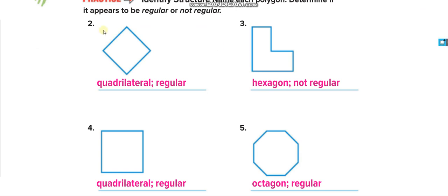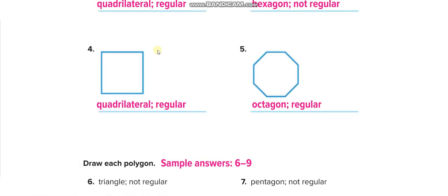Next: four sides, all of the same length, so it is a regular quadrilateral. Then: one, two, three, four, five, six — six sides means hexagon, but all the sides are of different length, so it is not regular. Next: four sides — quadrilateral, regular. Then: one, two, three, four, five, six, seven, eight — octagon, and all sides are the same length, so regular.